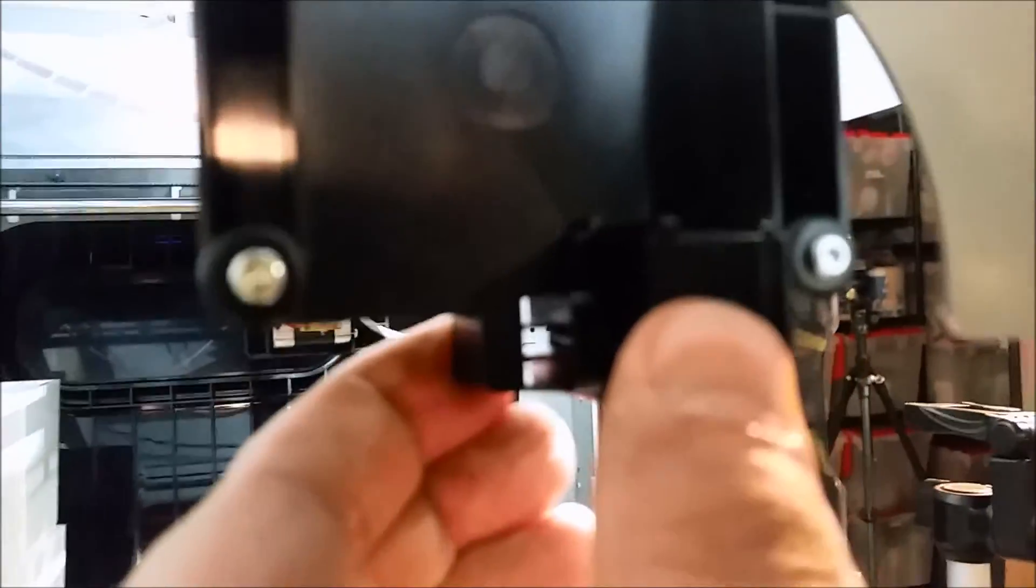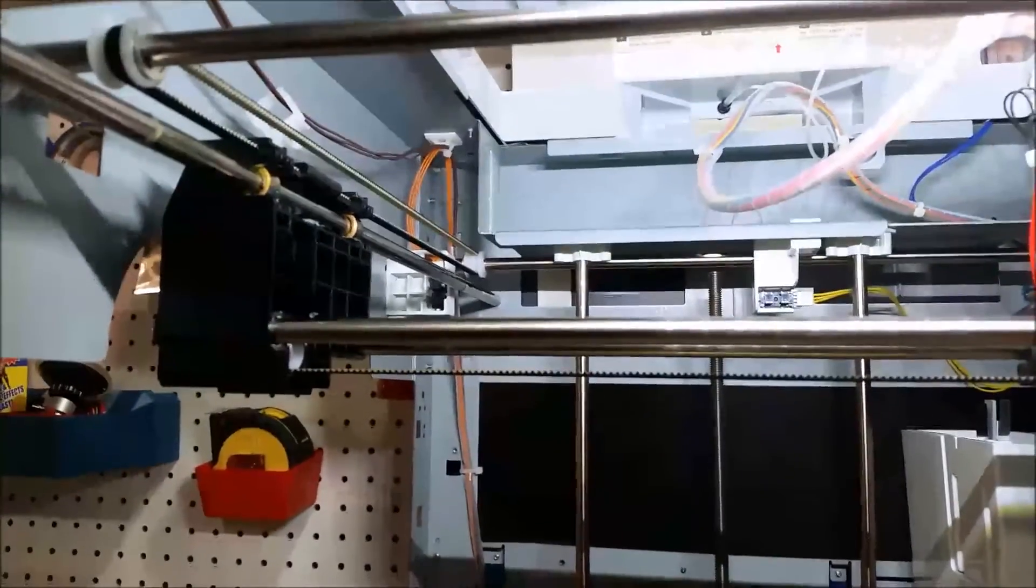And then basically what this housing is, this piece that's sticking out, is spring-loaded to hold tension. And basically what that screw does is lock the tension. I'm going to put the camera back in the tripod to get myself both hands back.